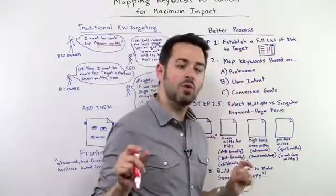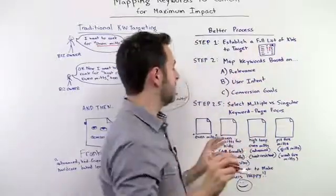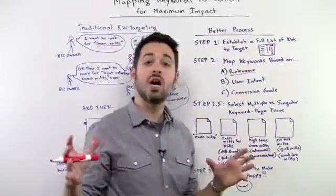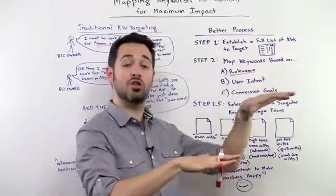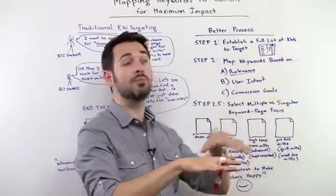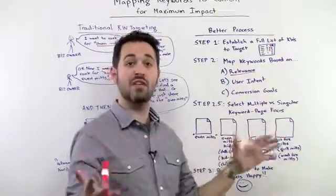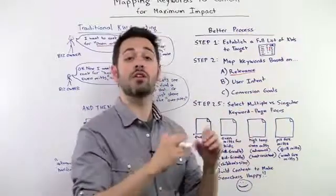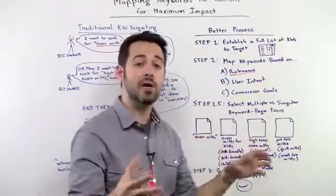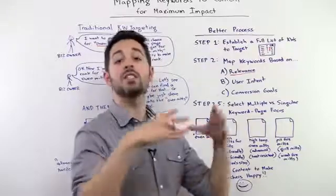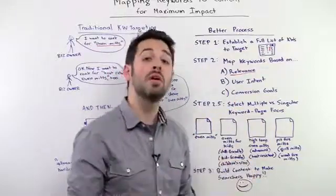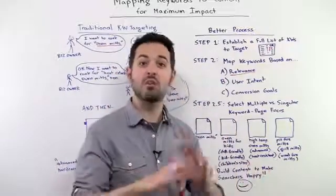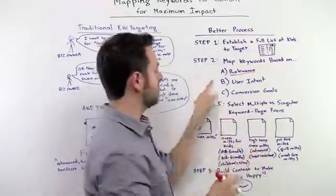And then we'll map the keywords to existing content based on their relevance, right? So this means, does the page's content actually serve the needs of the keyword phrase that they're targeting? So if you have a heat retardant oven mitts page, does that actually contain heat retardant oven mitts? And is that a full category page? Is it a subcategory page? Is it a single item that happens to be the most heat retardant oven mitts? Is it a brand page? What is it? Right? And we make sure that it's relevant.